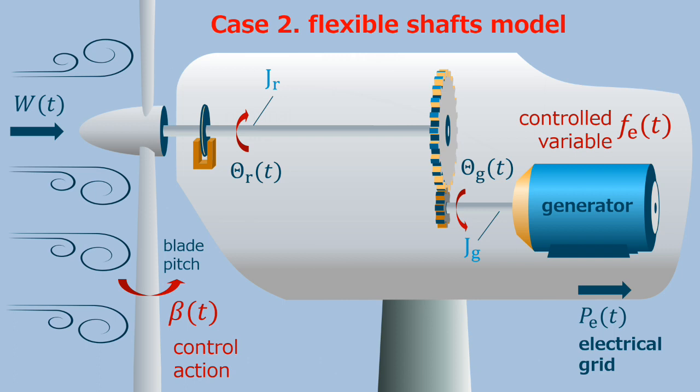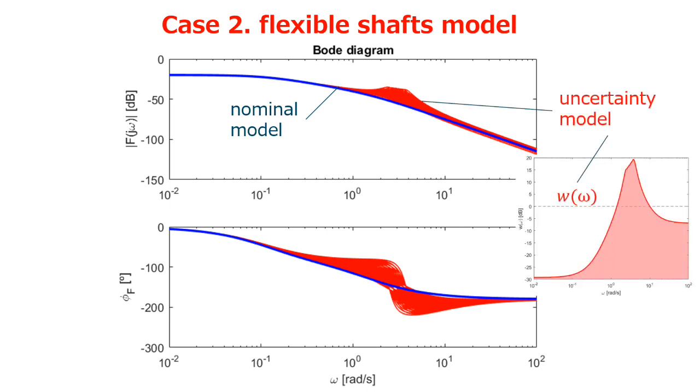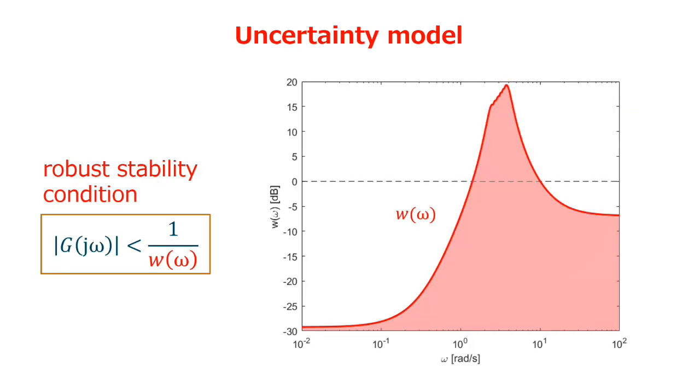Nonetheless, we know that due to the magnitude of the inertias involved, some structural flexibility is to be expected. This is the mechanical connection between the rotor and the generator, as a spring damper equivalent representing the shaft torsion. If we sweep the values of k and b parameters, spring and damper, we get a range of possible frequency responses for the plant, defining the uncertainty model. And that will be used for the robust stability condition.